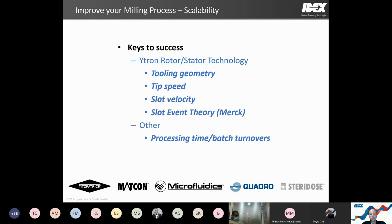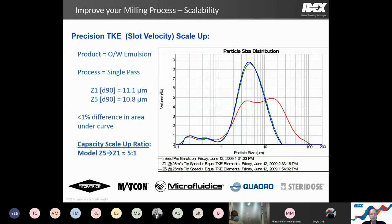Using our precision TKE or slot velocity scale-up model, we can show extremely close results in the scale-up process. Using this model on our Z emulsifier — a 5-to-1 scale-up between the Z1 and Z5 — the green and blue curves show less than 1% difference in area under the curve. This same model applies to our HV technology as well.